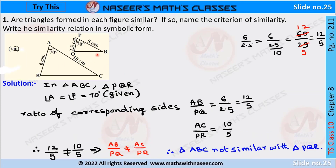We check whether these two triangles are similar or not. In triangles ABC and PQR, one angle and two sides are given. Angle A equals angle P equals 70 degrees. We find the ratio of the corresponding sides: AB by PQ equals 6 by 2.5, which is equal to 12 by 5. The other side ratio AC by PR equals 10 by 5. Since 12 by 5 is not equal to 10 by 5, the ratio AB by PQ is not equal to AC by PR. Therefore triangle ABC is not similar to triangle PQR.